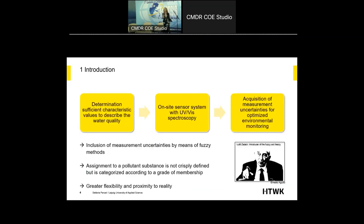In order to prevent this, we have to determine physical characteristic values to describe the water quality. For this, we are working on an on-site sensor system using UV-Vis spectroscopy. Every sensor-based system has an objective uncertainty, and if you have unstable operating conditions — which occur especially in the environmental sector — this leads to additional uncertainty. For example, changing temperature or humidity can also be a source of measurement uncertainty. It is really important to include these measurement uncertainties for optimized environmental monitoring.